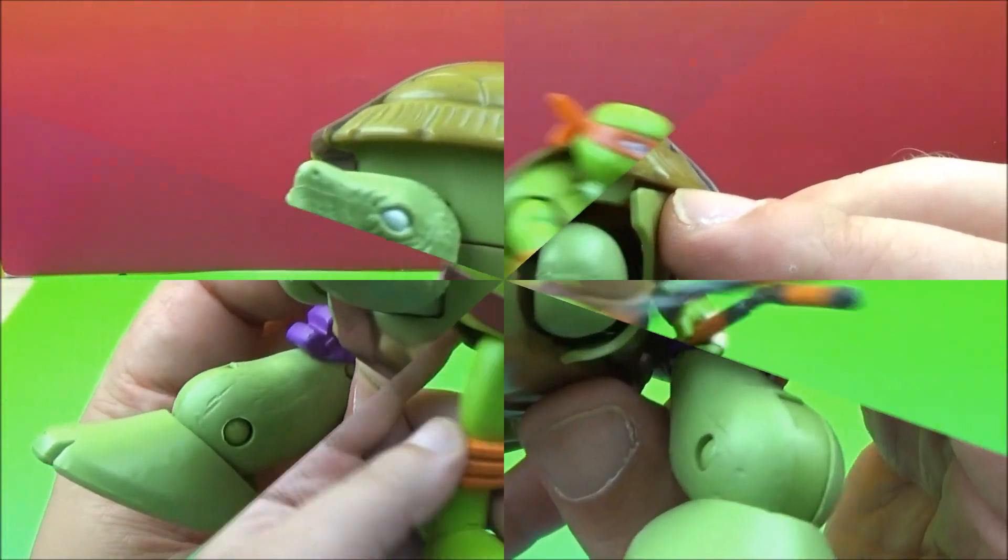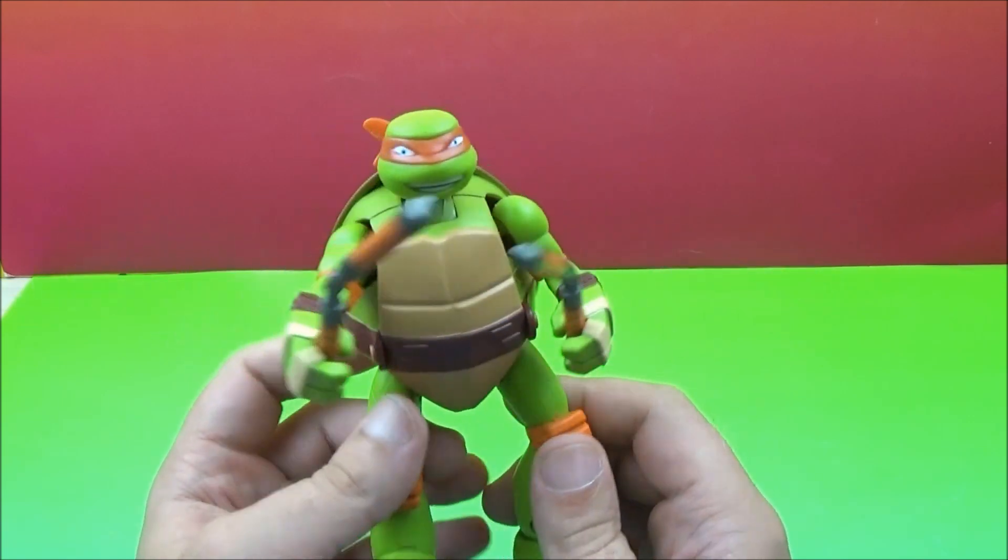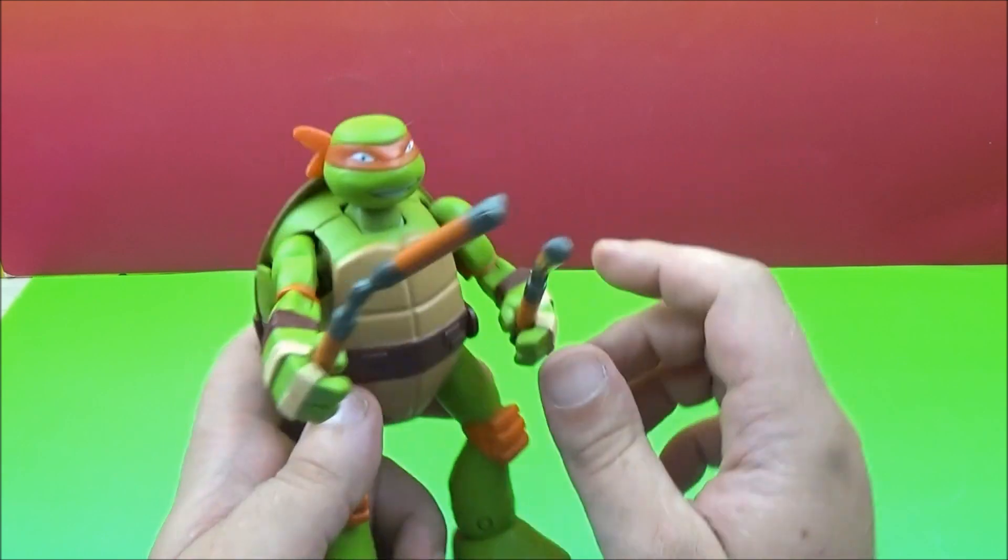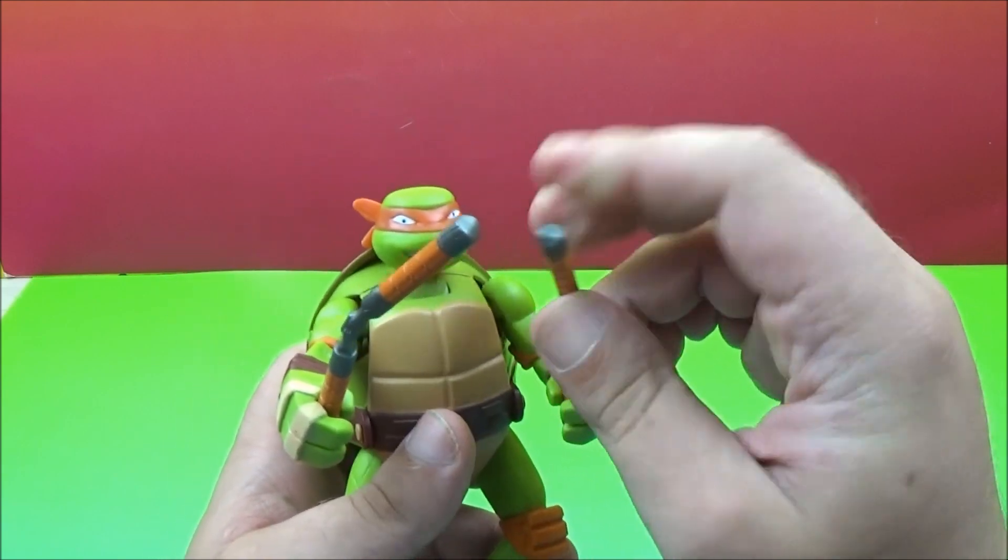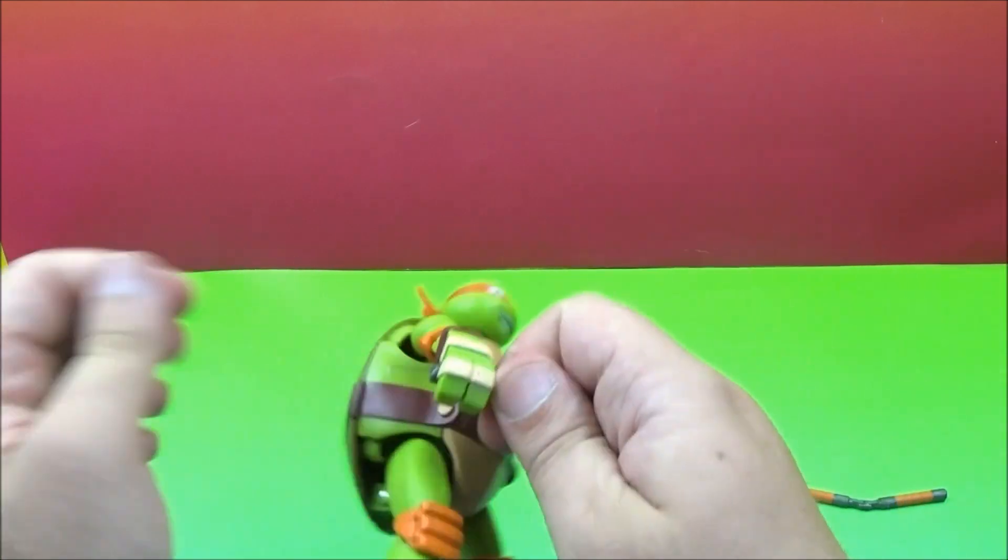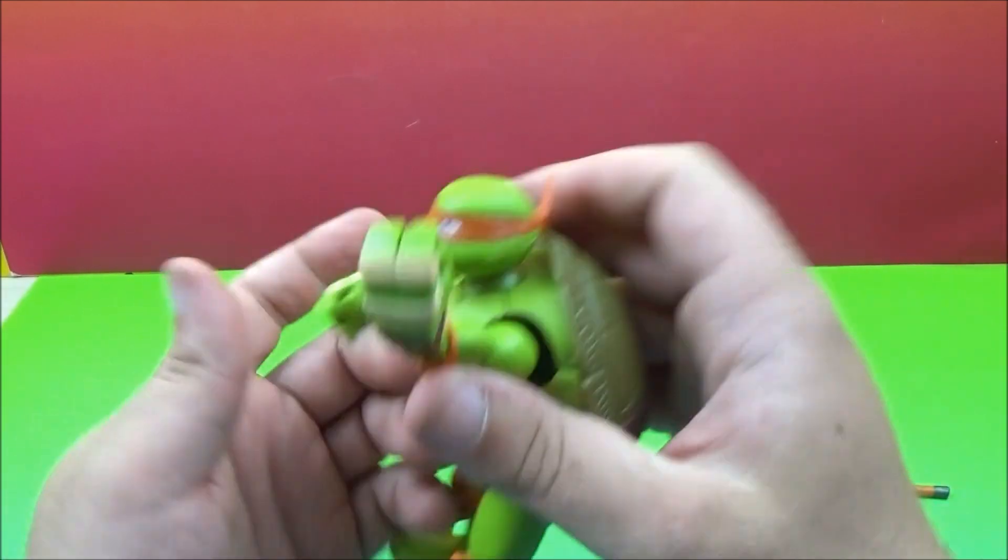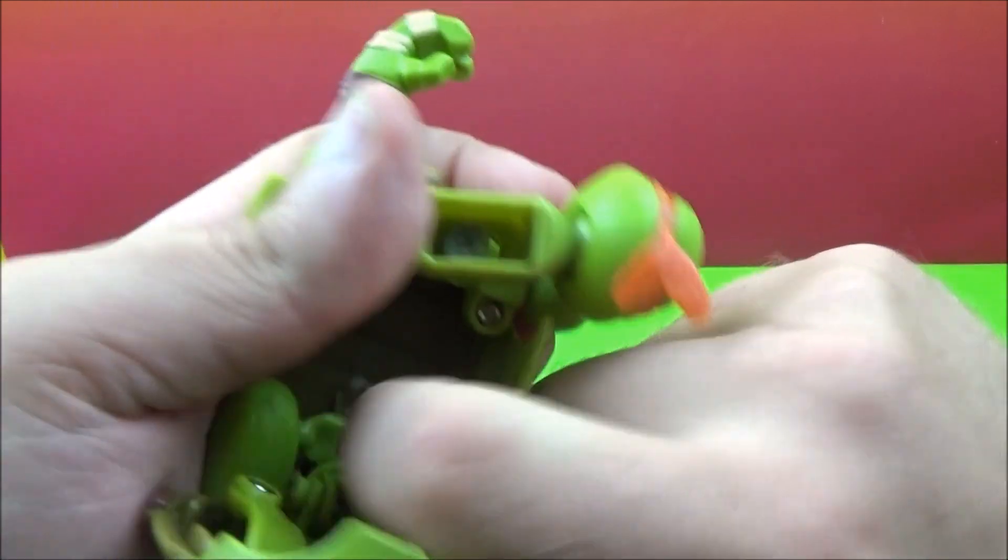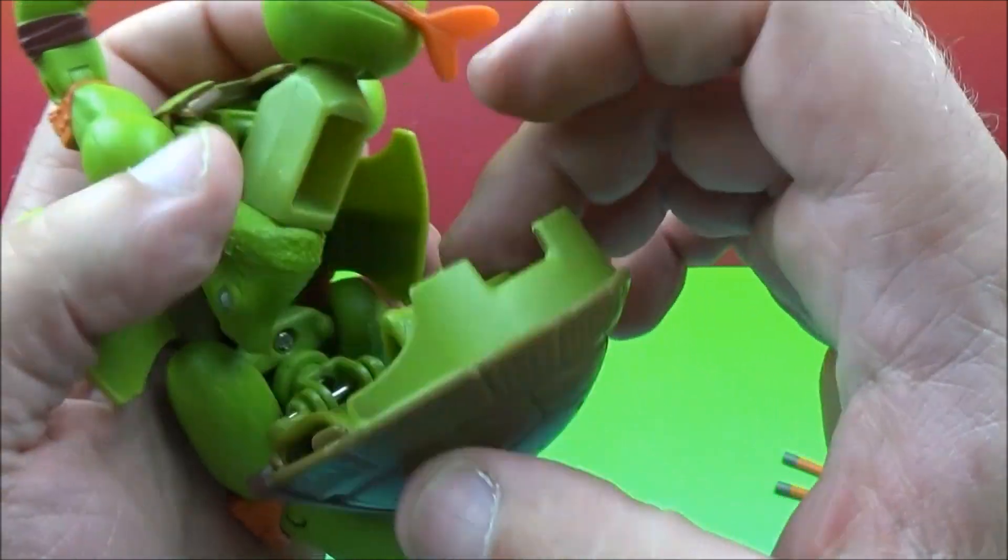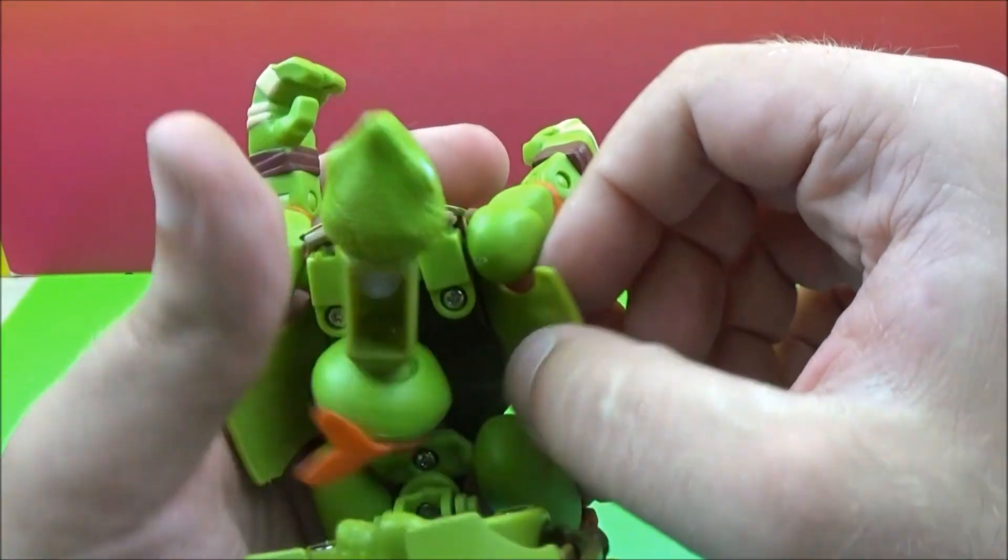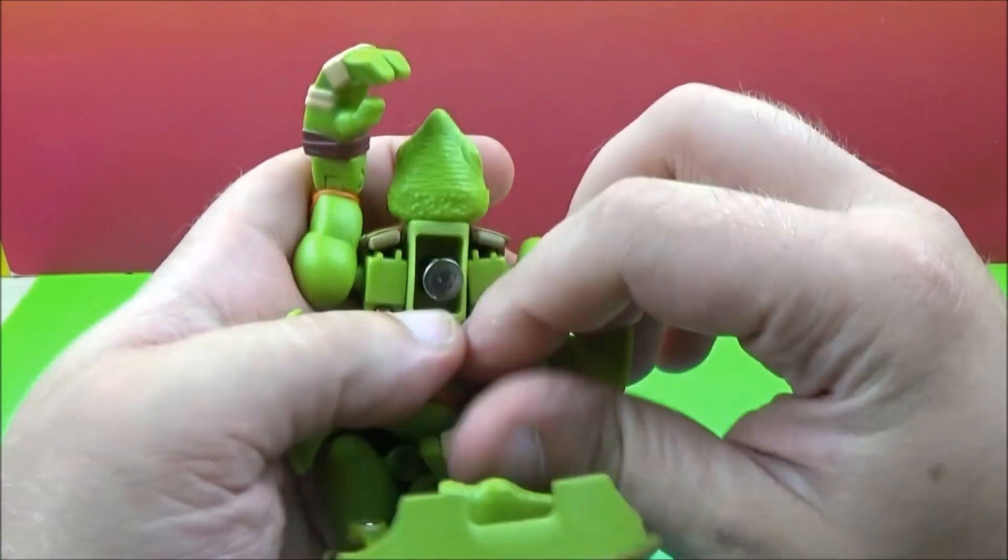So of course I saved the best for last. We have Michelangelo. He is the orange one and he has the nunchucks. Take a look at these. So these are fairly solid, there is a little bit of bend to them but nothing substantial. Get the shell pulled out. We might actually know what we're doing now with these transformations. They're a little bit tricky to get everything the way that they're supposed to go.